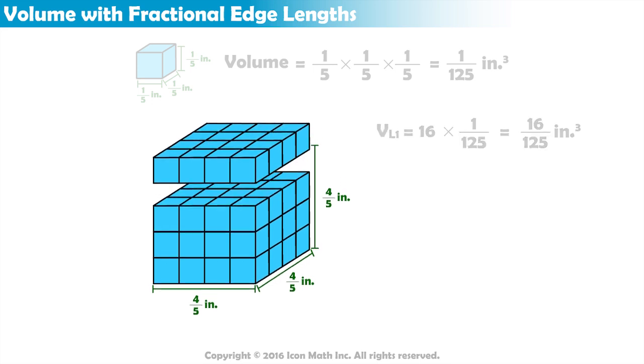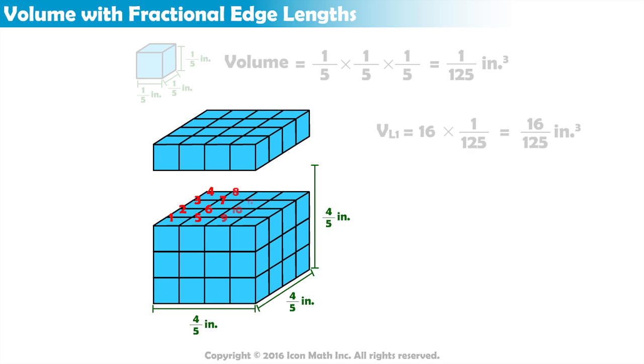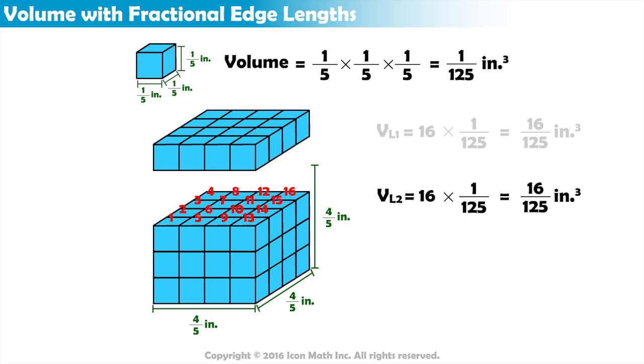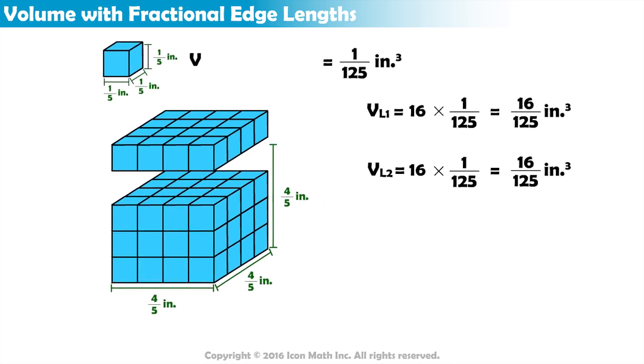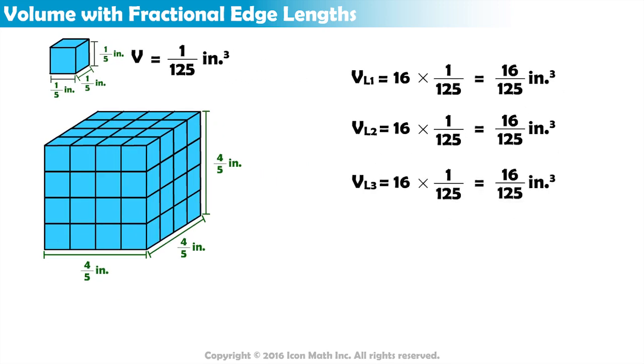The second layer of our figure is also created with 16 smaller cubes. So, the second layer also has a volume of 16 times 1 over 125 or 16 over 125 inches cubed. This is true for the third and fourth layer of our figure as well.